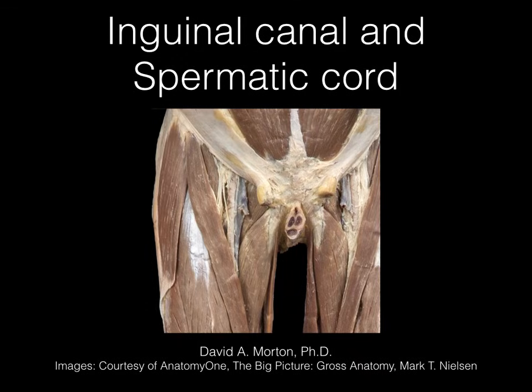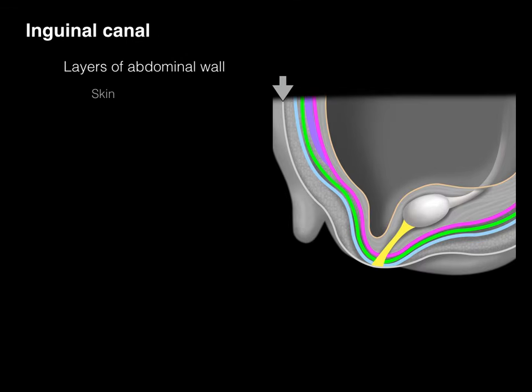Inguinal canal and spermatic cord. To understand the inguinal canal, we need to review the layers of the abdominal wall. This is showing a sagittal section of the abdominal wall, pelvis, and perineum of a developing male — a schematic where we're looking at a medial view.